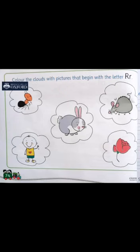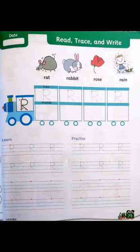Here is a cloud for you that has some pictures. You have to color the pictures whose beginning letter is R. Color the rabbit, rat, and rose — R for rat, R for rabbit, R for rose.